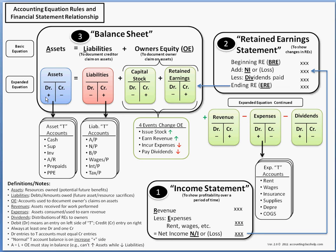We also have some pluses and minuses here to help remember how accounts change in terms of debits and credits — how they're increased or decreased. To increase an asset account, we debit it; to decrease it, we credit it. Just the opposite is true for liabilities: to increase a liability, we credit it; to decrease it, we debit it.